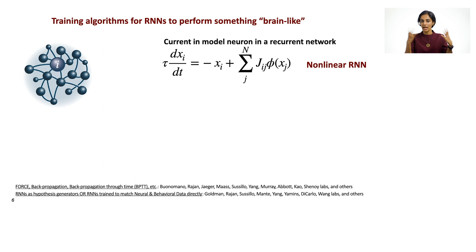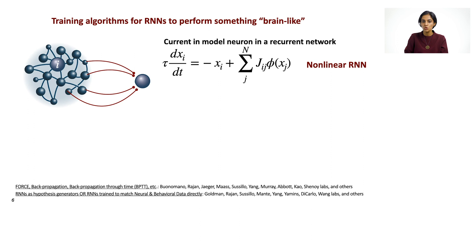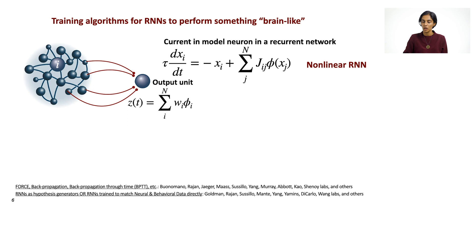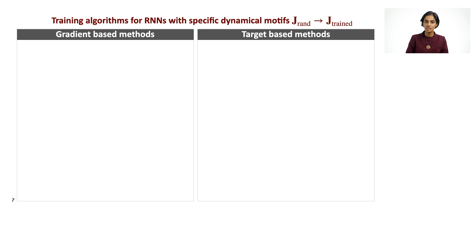There are training algorithms for RNNs to perform something brain-like. This is the equation we developed at the end of the first lecture — a nonlinear RNN connected initially through random connectivity weights. In order to train networks to do something brain-like, one common approach is to attach an output unit to it as a linear readout. The output unit Z of T varies over time as just a linear sum of everyone's firing rate within this network. Training algorithms can change the readout weights as well as the recurrent weights within the network.